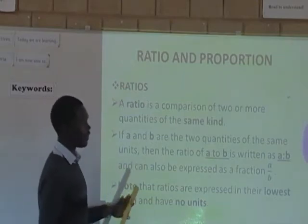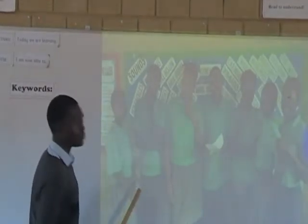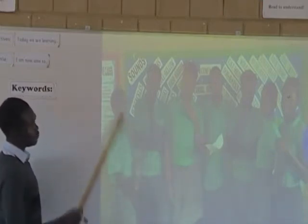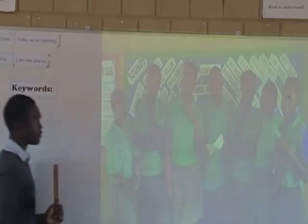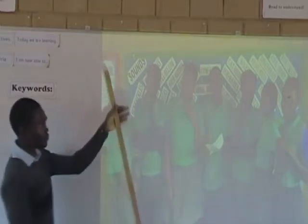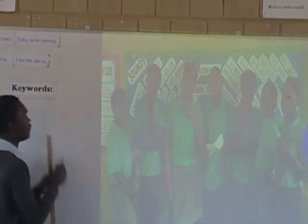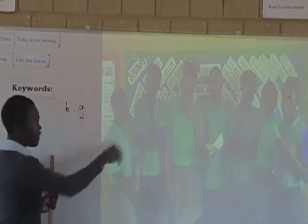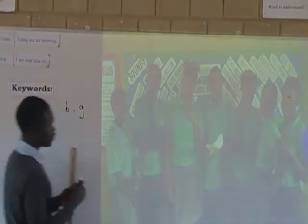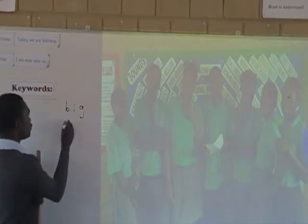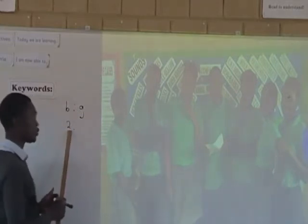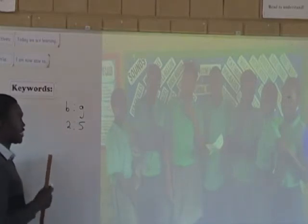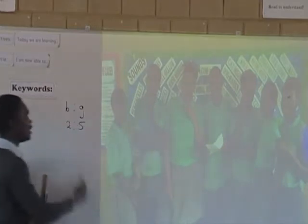Let's look at this picture. In our picture here, we have a group of seven students. We can compare boys to girls — that is, B to G. How many boys do we have here? We have got two boys. If we take out two, the rest is the number of girls, which is five. So the ratio of boys to girls in this picture is two to five.